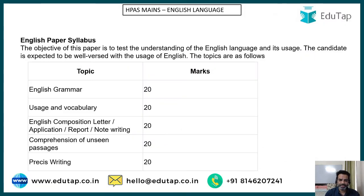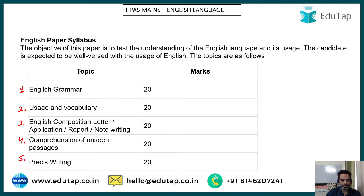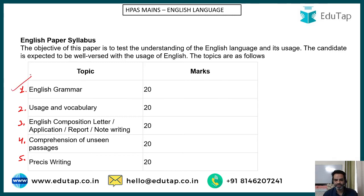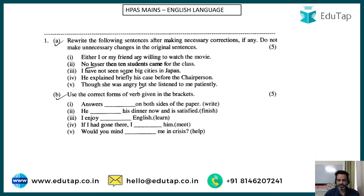Let's begin. We have already discussed that there are five sections basically asked in your Mains exam: number one is grammar, second is vocabulary, third is composition of a letter or a report, fourth is comprehension passage, and fifth is precis writing. We will start section by section and discuss all these verticals of your paper. Today we'll be discussing English grammar, and first of all, let's look at the type of questions they throw at you.